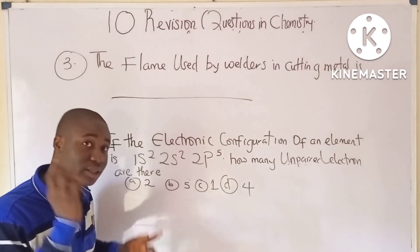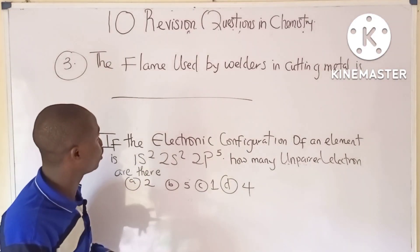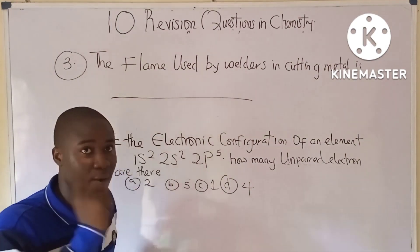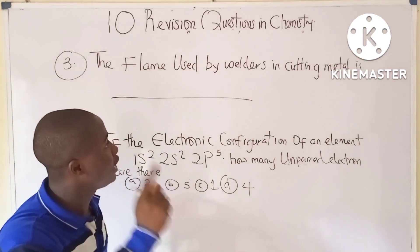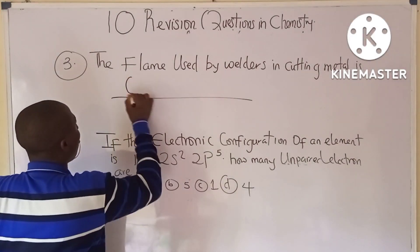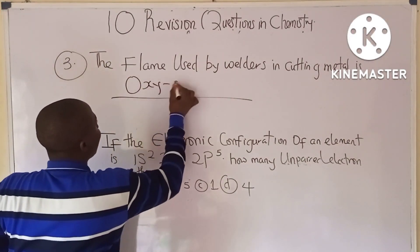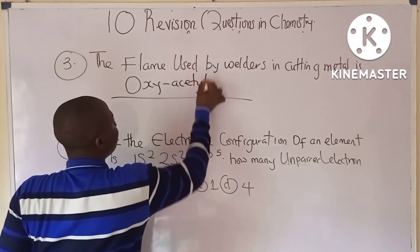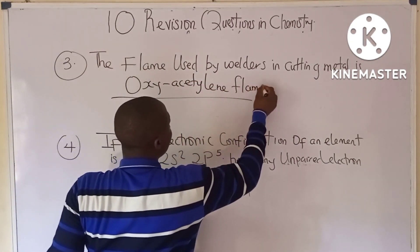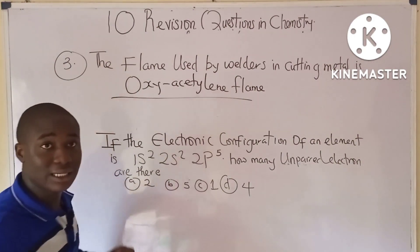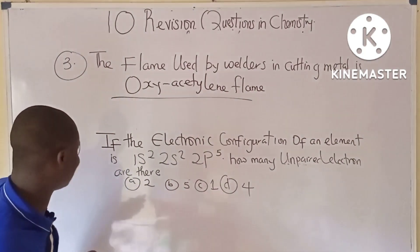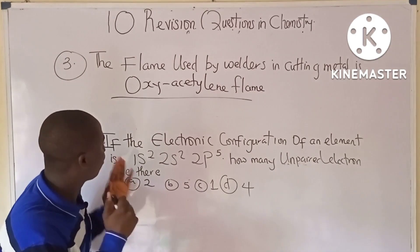Question three says: the flame used by welders in cutting metals is simply called the oxy-acetylene flame.